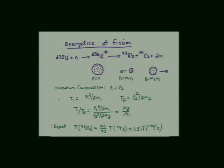Focusing on the energetics: assuming a thermal neutron (zero kinetic energy and zero momentum), the compound nucleus is at rest. The two heavy fission fragments fly apart with equal and opposite momenta to conserve momentum. The lighter fragment — rubidium-93 in this example — gets more kinetic energy than the heavier one. The kinetic energy ratio is T₁/T₂ = M₂/M₁. Since the kinetic energies are small compared to rest mass energies (about 1 MeV per nucleon versus 930 MeV per amu), classical mechanics is valid.